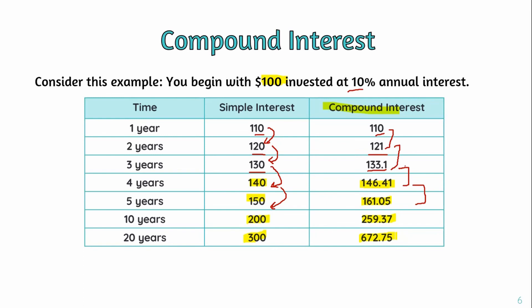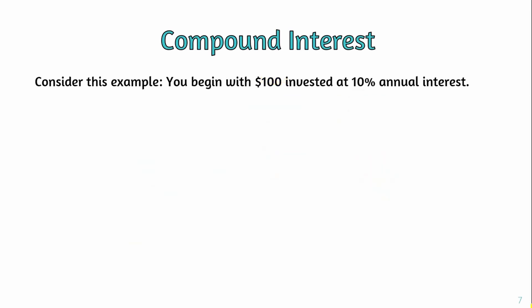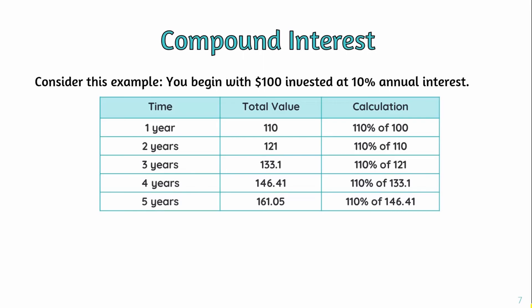To show the step-by-step compound interest calculation: starting with $100 at 10% annual interest. 10% of $100 is $10, so after year one you have $110.